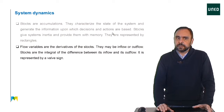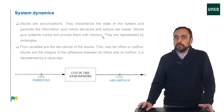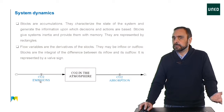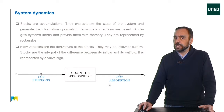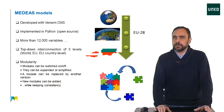Flow variables are the derivatives of the stocks. They may be inflow or outflow. The stocks are the integral of the difference between its inflow and its outflow. Flows are represented by a valve sign. For example, the concentration of CO2 in the atmosphere is a stock that has two flows: CO2 emissions, which increase the concentration as inflow; and CO2 removals, which reduce the concentration of CO2 as outflow. In the MEDEAS models, there are hundreds of stocks, flows, equations, delays, and auxiliary variables.